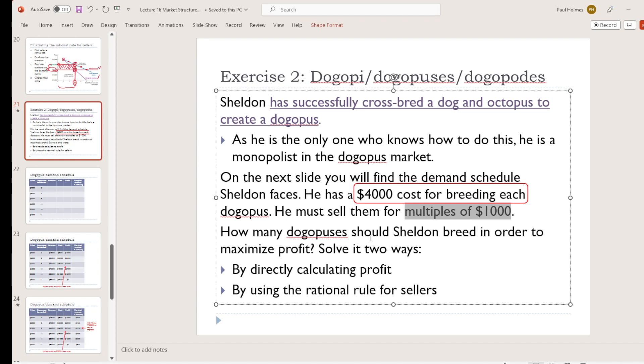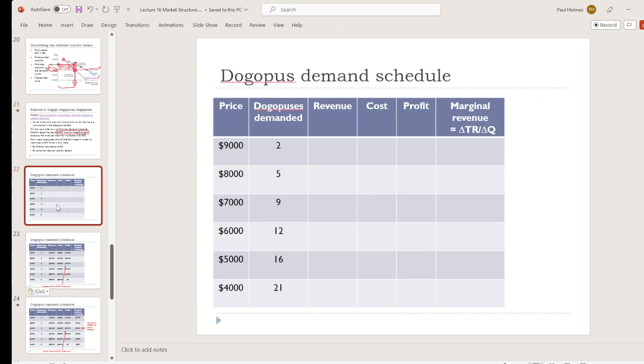We'll do it two ways. The first way is by calculating out revenue and cost in order to find the profit. And the second way is to calculate out some marginal revenue and figure out how to do it by using the rational rule for sellers, comparing marginal revenue and marginal cost.